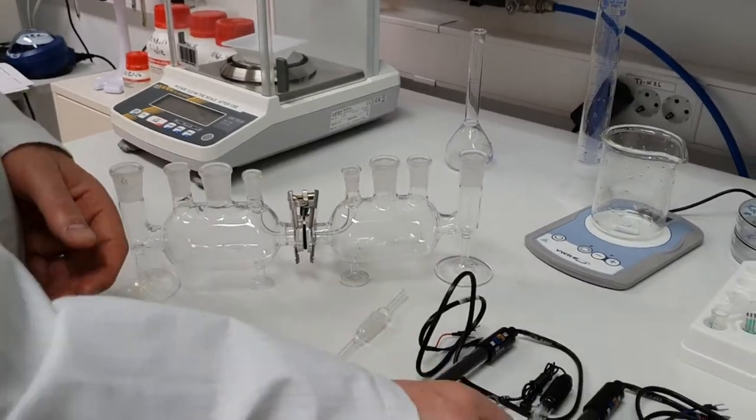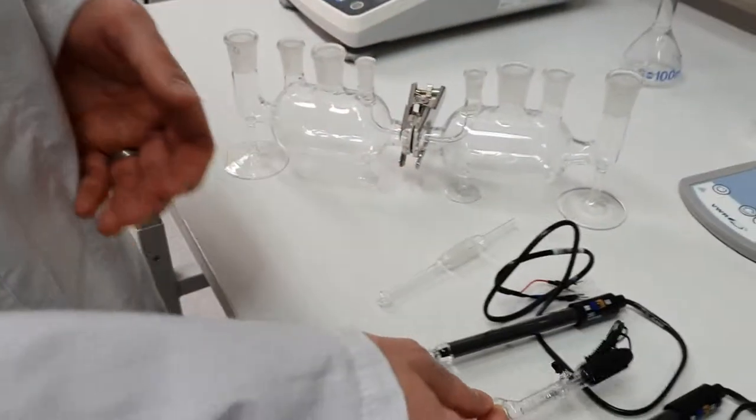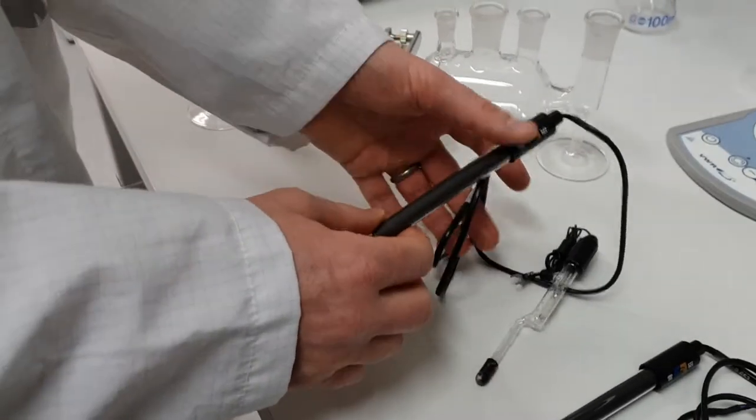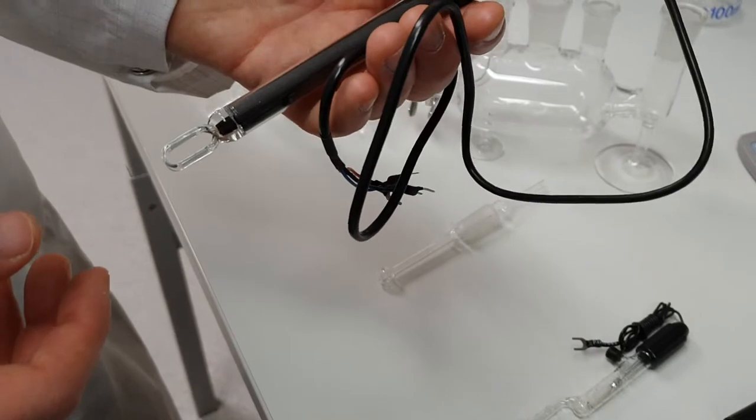The cell comes with a silver silver chloride reference electrode and it also comes with two conductivity probes. So these are two platinum conductivity probes.